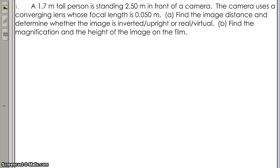In this video, I will show you how to solve a converging lens problem. A 1.7 meter tall person is standing 2.5 meters in front of a camera. The camera uses a converging lens whose focal length is 0.05 meters.